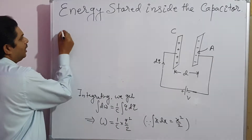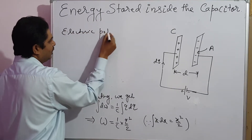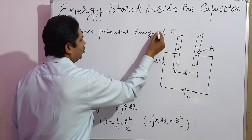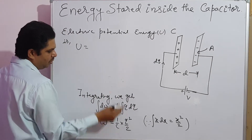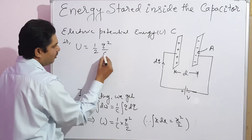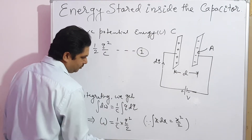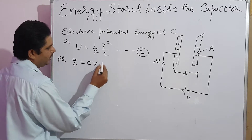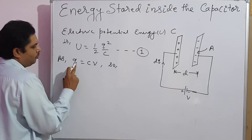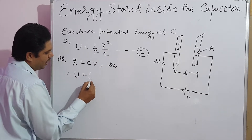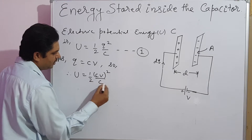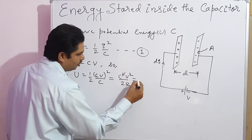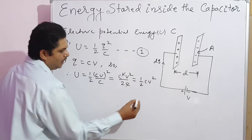So we can say that electric potential energy U equals half Q squared by C. Let this be equation 1. As Q equals CV, put the value of Q here: U equals half (CV) squared divided by C, which gives C squared V squared by 2C. Cancelling, you get U equals half CV squared. Let this be equation 2.